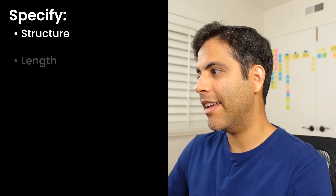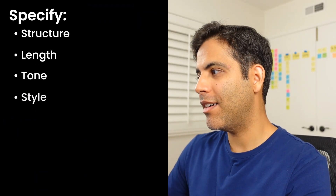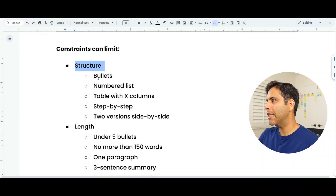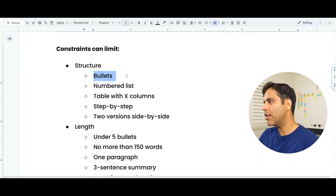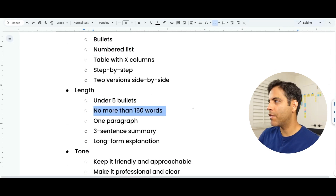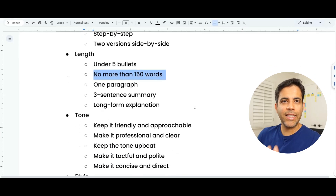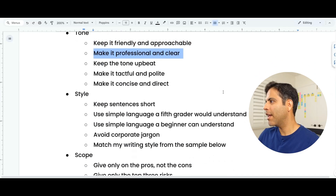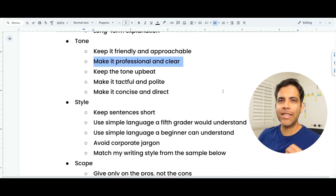With constraints, you can limit the structure, length, tone, style, scope, format, and level of detail. For structure, it could be giving bullets or a numbered list. For length, it could be 'keep it under five bullets' or 'no more than 150 words.' For tone, you can say 'keep it friendly and approachable' or 'professional and clear.' Tone constraints tell AI the energy or vibe you want to convey.